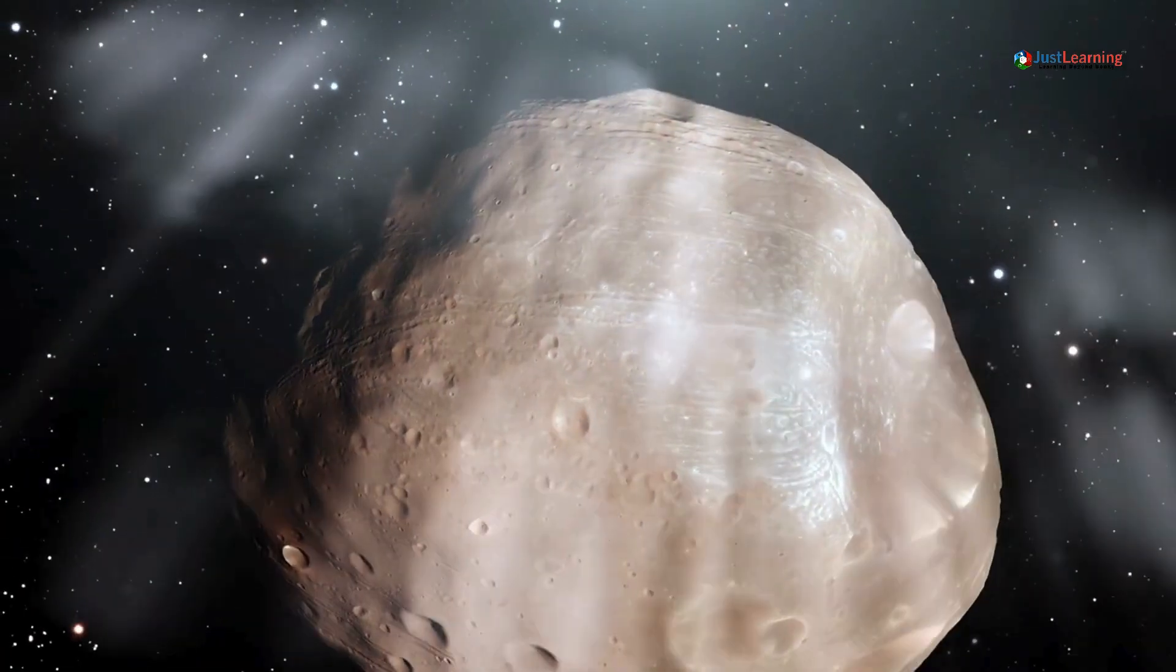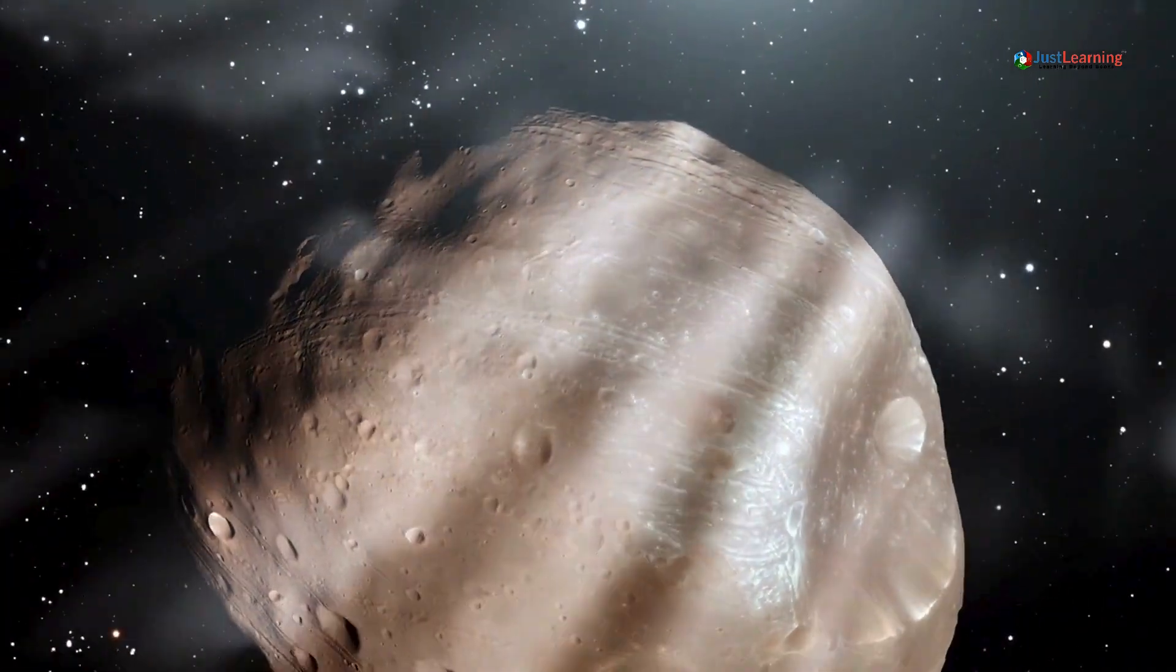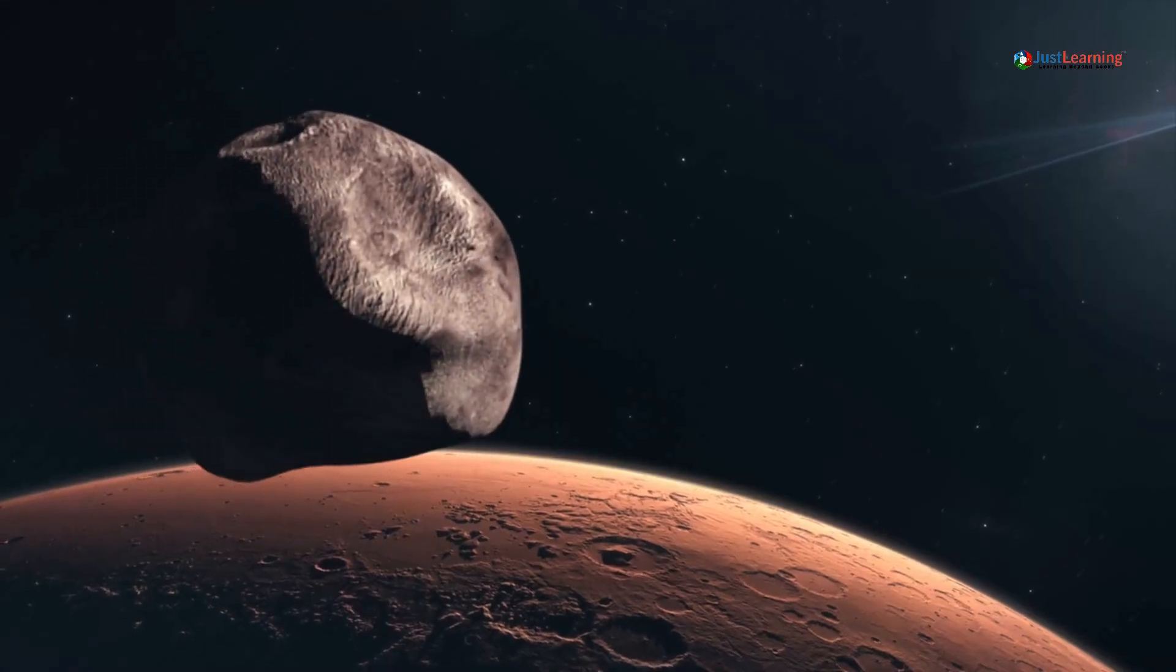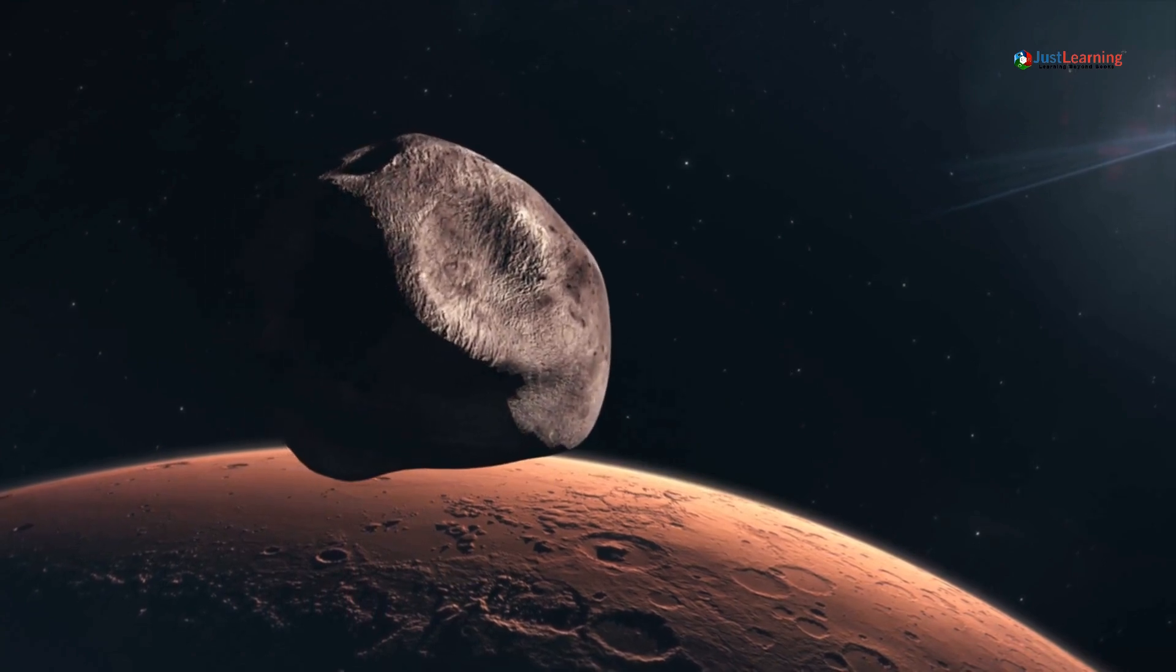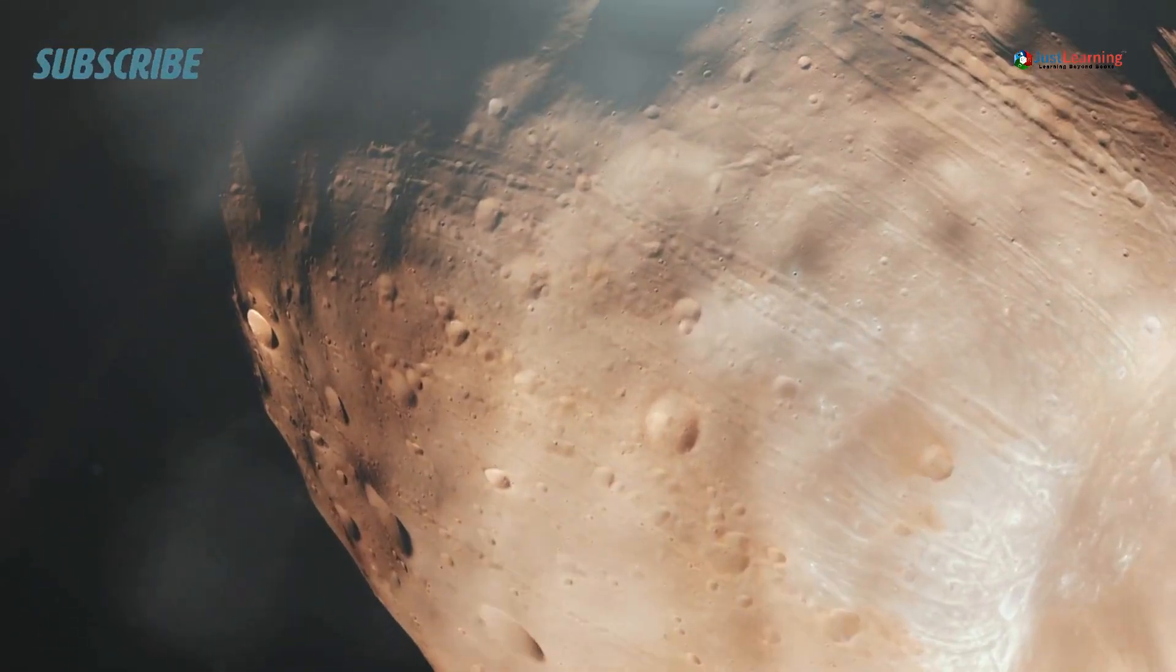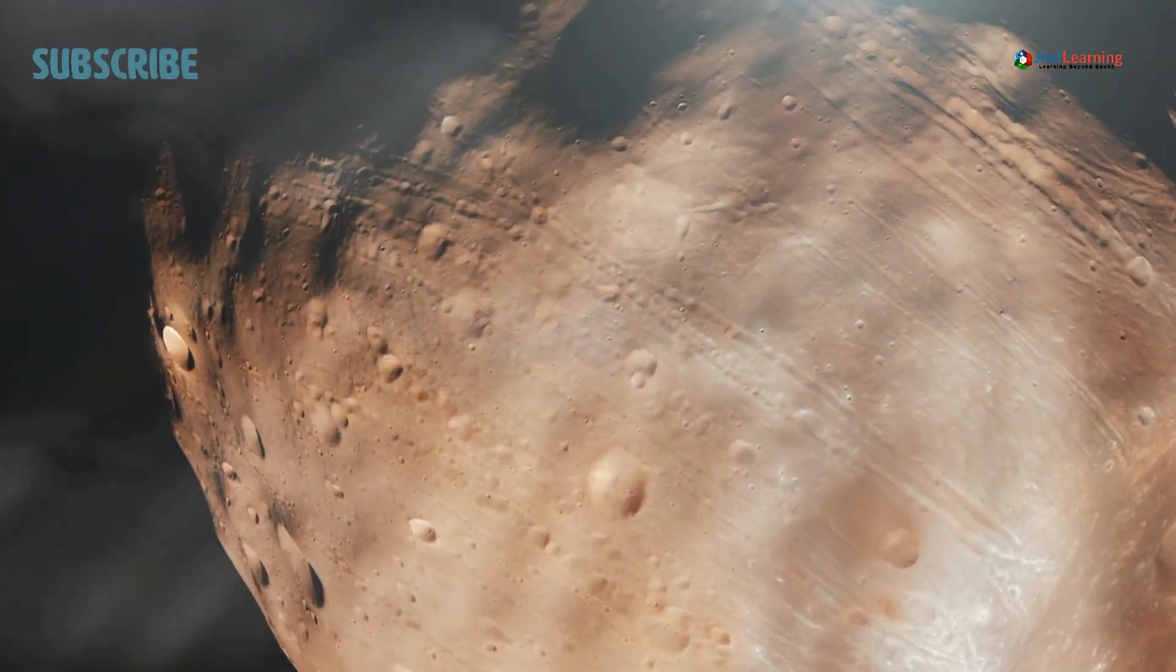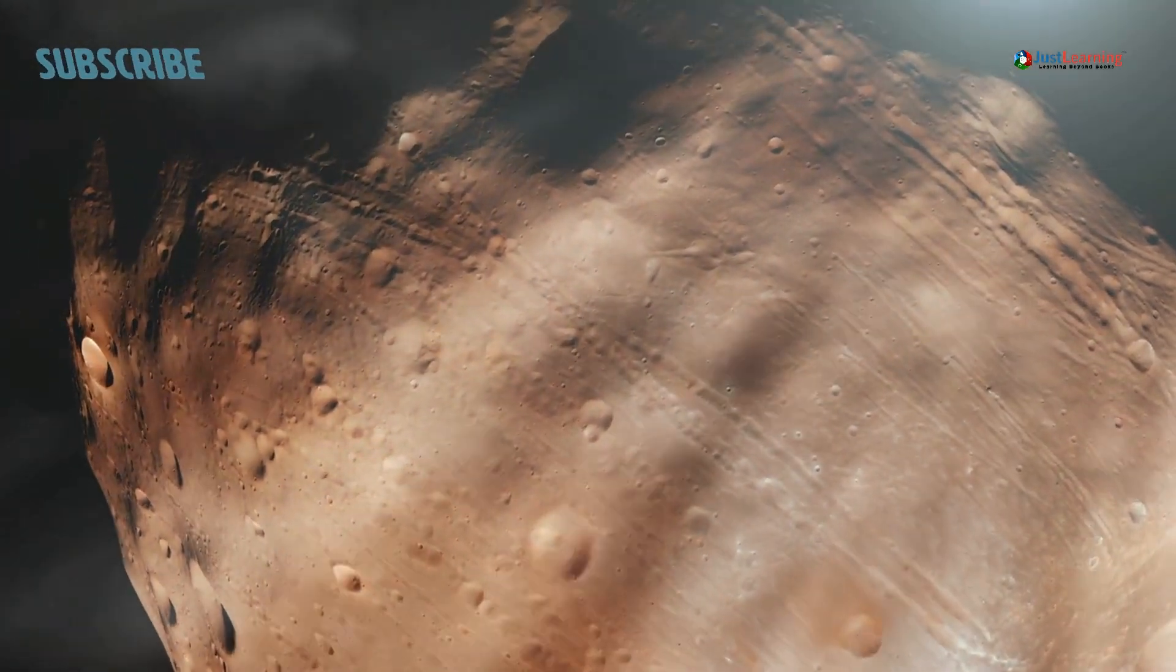Next up is Mars, which has two true moons, Phobos and Deimos. Both are just a few miles wide and orbit very close to the red planet. Phobos is slowly falling toward Mars and is predicted to crash into the world's surface someday.